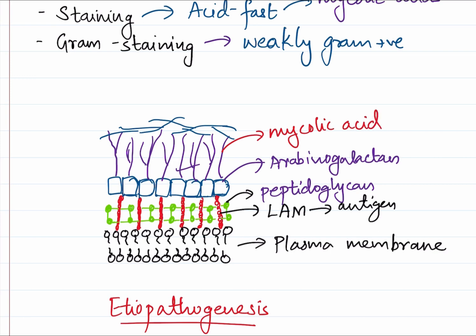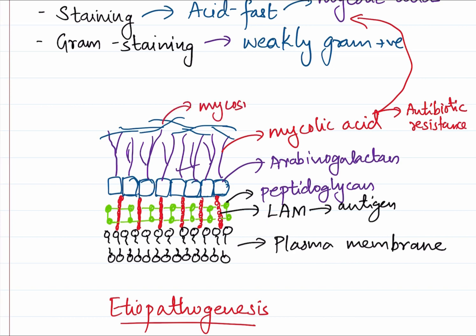The mycolic acid layer is responsible for the acid fastness of the bacteria. It also does an additional function - first is acid fastness, and second is antibiotic resistance. They reduce the entry of antibiotics into the cell, so they confer antibiotic resistance as well. And here we have the mycocerosates. That's about the structure of the mycobacterial cell wall.